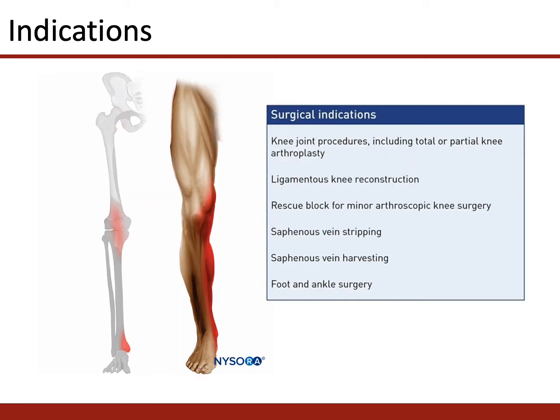The image to the left shows the coverage when placing an adductor canal nerve block. We can see cutaneous supply of the medial aspect of the knee extending down to the medial aspect of the leg, and osteotome supply of the medial aspect of the knee and of the medial malleolus. So not complete coverage of the knee and not complete coverage of the ankle — therefore it can be used in combination with other techniques to provide complete coverage, or used as analgesia alone.